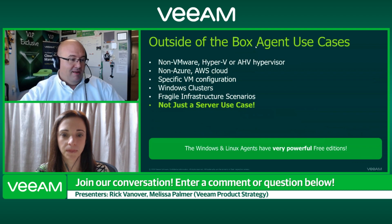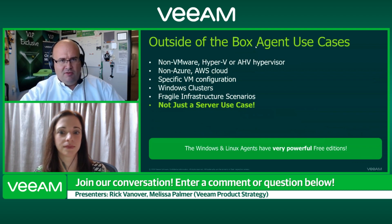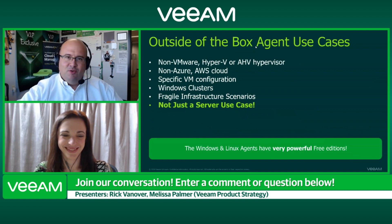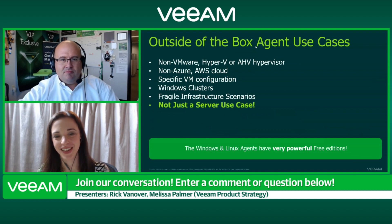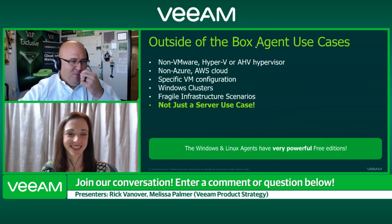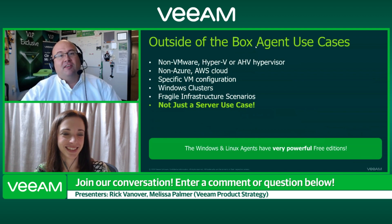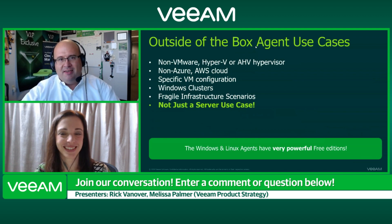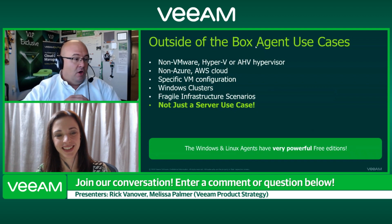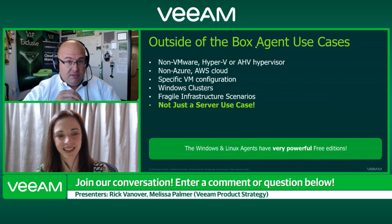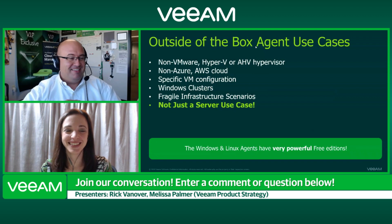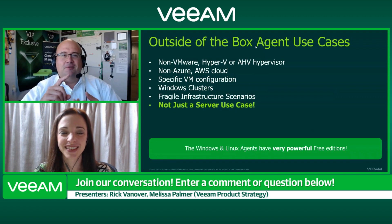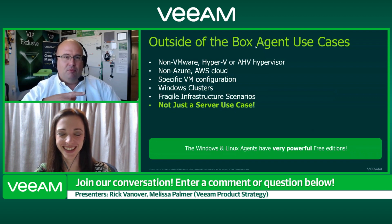If you're using something that's not VMware, not Hyper-V or not AHV, you can use the agent on those platforms. If you wrote a hypervisor and you're running your data center on that, you can still get the backup. Or just KVM — that's the big one — or Xen. And then also alternative clouds — Tencent Cloud, Google Cloud, Ali Cloud — that would be a use case as well.